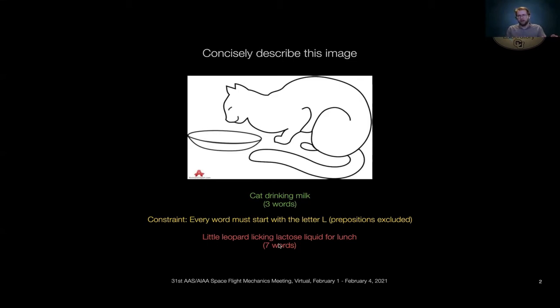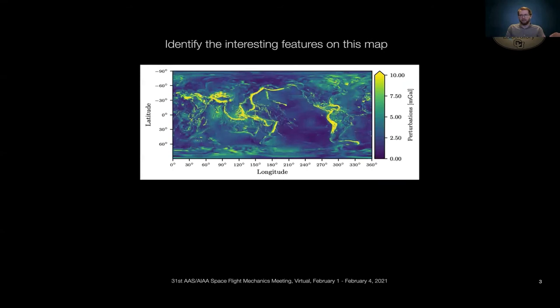So what does this have to do with gravity field modeling? Let's turn to a slightly more relevant example of the same exercise. So this is a map of all of Earth's gravitational perturbations above J2, and I want you to just take a moment to identify the interesting features, and you'll probably say, okay, well, it seems like the Himalayas have some perturbations, the Andes, some tectonic shelf boundaries, etc.